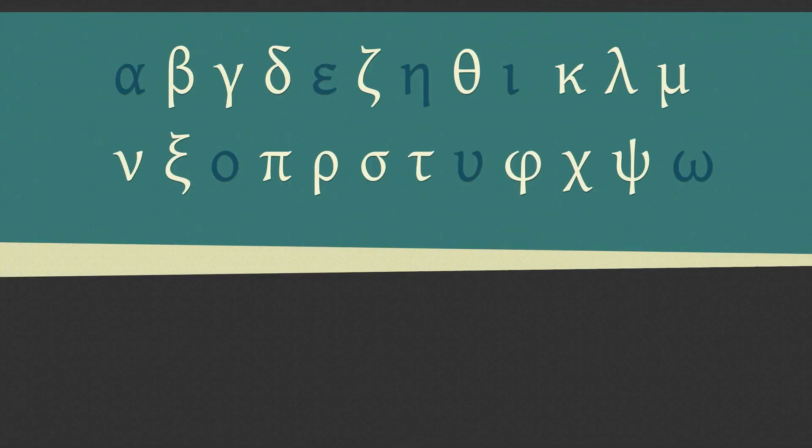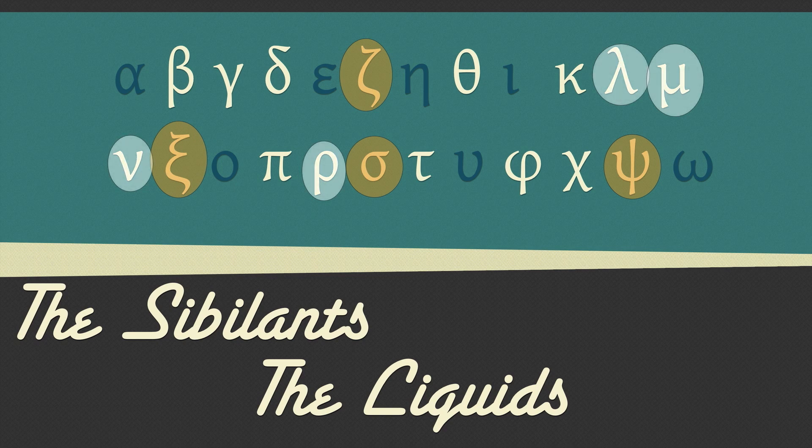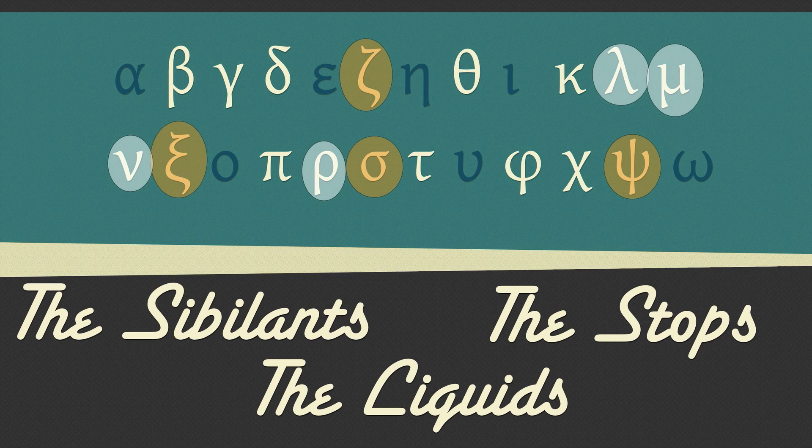Greek consonants are classified into three categories. Sibilants, letters that have an s sound. Liquids, when we say these letters the air slides through our mouth like liquid. The rest are called stops because the flow of air stops at some point when we say them.